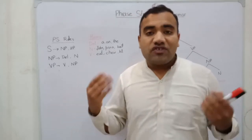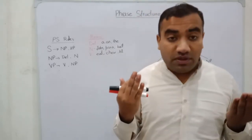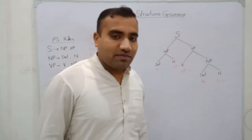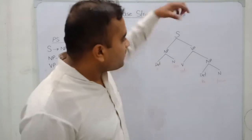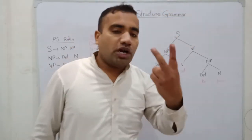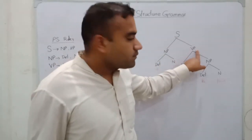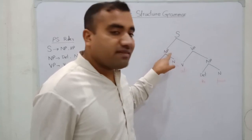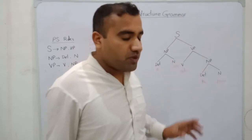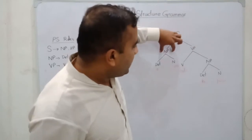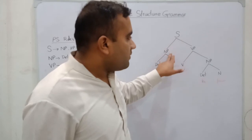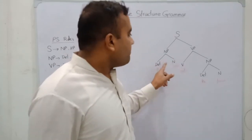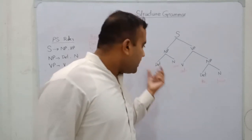In Chomsky's concept, let's see how the sentence can be represented in a diagram. A sentence consists of two items: NP and VP. These two items make S. NP is further made of two items, and VP is made of two items. The rules say NP has two components: a determiner — which can be optional in some languages — and a noun.